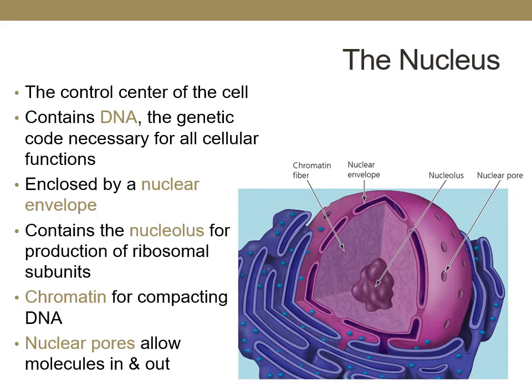The cell requires many different types of proteins to keep the cell functioning properly and is always replacing those that have been degraded. In the nucleus, DNA is transcribed into RNA. Because the ribosomes are located in the cytoplasm, the RNA must leave the nucleus through pores in the nuclear envelope to get to the ribosomes. The ribosomes are located just outside of the nucleus, ready to translate the RNA into proteins.